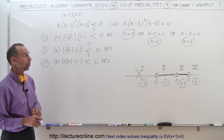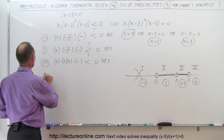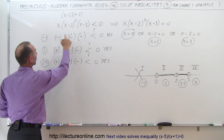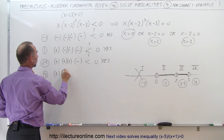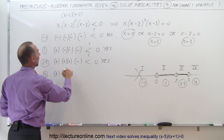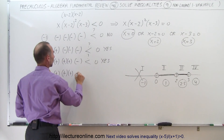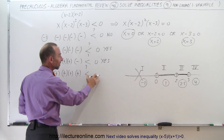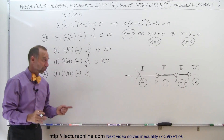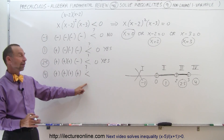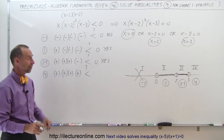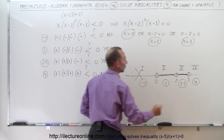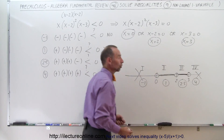Finally, we test 4 for Region 4. Plugging 4 into X gives a positive number. Plugging into (X minus 2) gives 4 minus 2, a positive, counted twice. Plugging into (X minus 3) gives 4 minus 3, also a positive number. Multiplying all positives together gives a positive result — bigger than zero, not less than zero. So the answer is no, it does not satisfy the inequality, and Region 4 is not part of the solution.